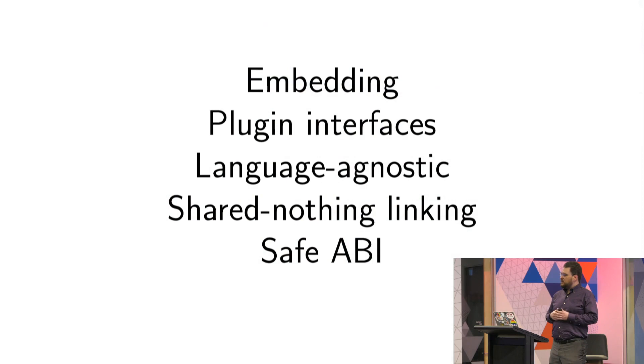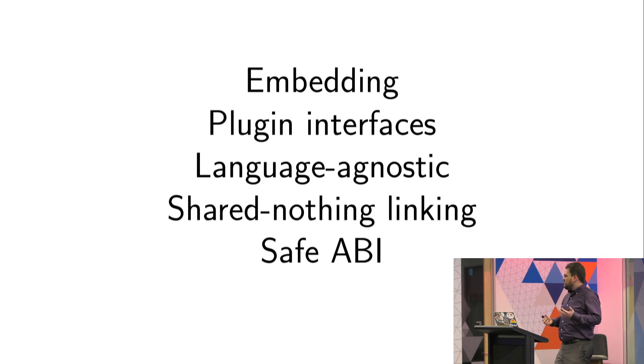I want to use WebAssembly as the standard way to do embedding, the standard way to do plug-in interfaces that can be written in any language rather than just C. It is language agnostic, it's safe, it's sandboxed. I'm excited about the possibility of shared-nothing linking, of libraries that are not all-powerful within your address space, and things like the WebAssembly interface types proposal, which may make it possible to have a safe non-C ABI for languages like Rust and Python to talk to each other without going to a least common denominator.